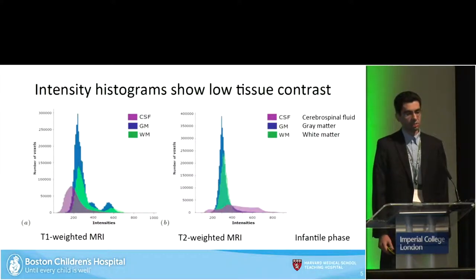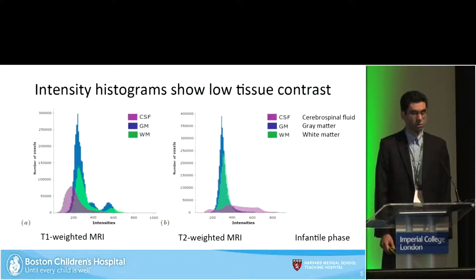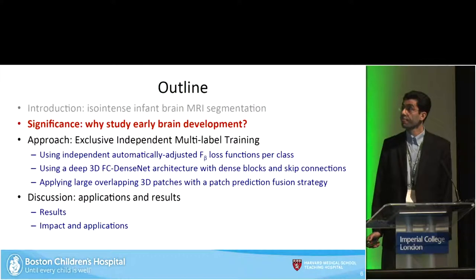If you look at the histograms, you see that at the infantile or iso-intense phase, for both the T1-weighted and T2-weighted MRI, there is a lot of overlap between the intensity values of the gray matter and white matter. Basically, they are very difficult to distinguish from each other based on MRI scans.